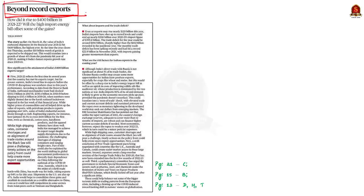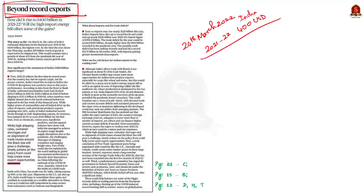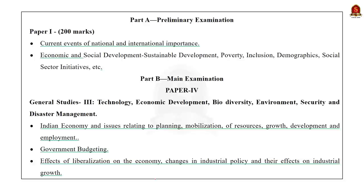Let us start with the first news article. Recently in our 24th March discussion we saw that India's exports for the financial year 2021-22 crossed 400 billion US dollars. Today's article is an extension of that — it focuses on the significance of this achievement, India's import and trade deficit situation, and factors that might risk Indian exports in coming years.